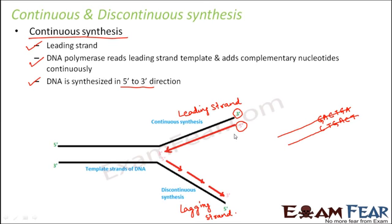On the leading strand, DNA synthesis occurs in the same direction as the growing replication fork, because helicase is moving in that direction and gradually increasing the replication fork in that direction. So the direction of replication fork growth and the direction of continuous synthesis on the leading strand are the same.